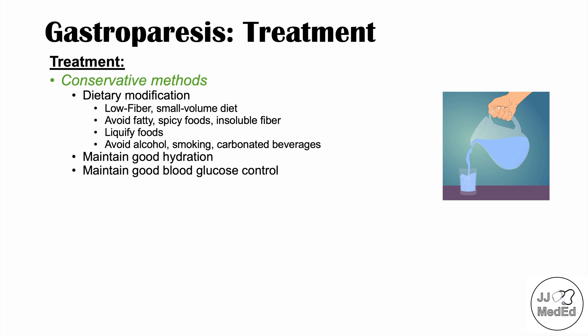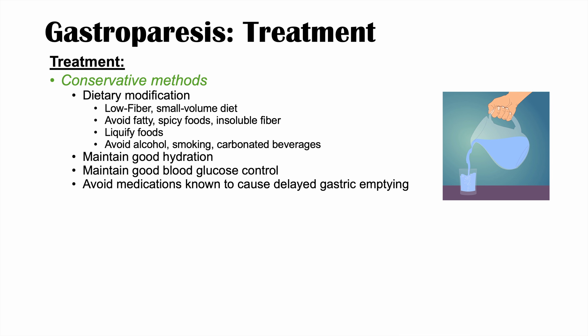You also want to maintain good hydration and blood glucose control. In diabetic gastroparesis, chronically high or poorly controlled blood glucose can cause irreversible nerve damage, but even maintaining good glucose control can help with symptoms. It has been shown that acute changes in blood glucose levels can alter gastric emptying. You should also avoid medications known to cause delayed gastric emptying, and exercise can also increase gastric motility.